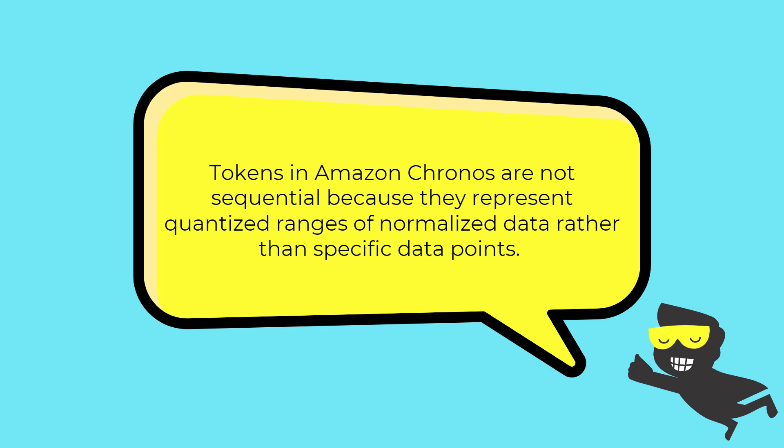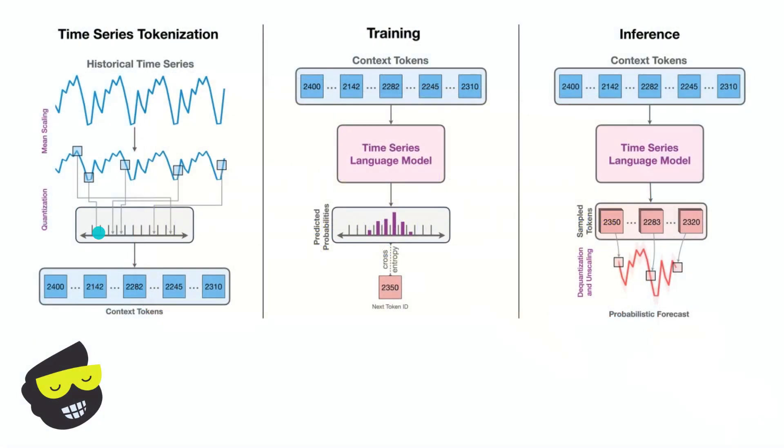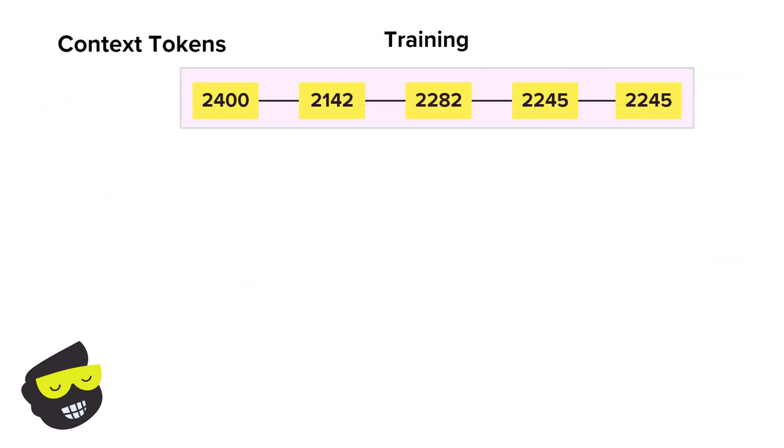The next step is then training. So once our time series tokenized, we take the time series, we do mean scaling, we do the quantization, then we have the context tokens, we bring the context tokens to training. What are context tokens? So the sequence of tokens from the previous step is fed into the model. Then we have the time series language model.